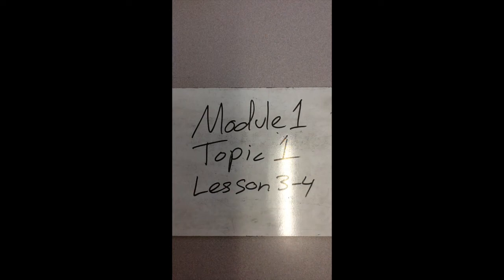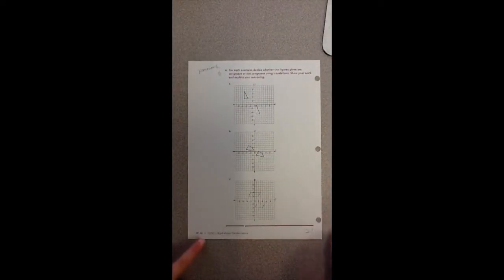We are now on Module 1, Topic 1, Lesson 3 through 4. We have two pieces of paper for our homework today. The very first page is M1-48. On here it says for each example decide whether the figures given are congruent or not congruent using translations. Show your work and explain your reasoning. Some of you can judge the congruency based on tracing them with patty paper and then overlaying them.